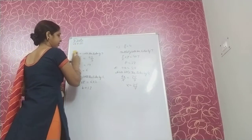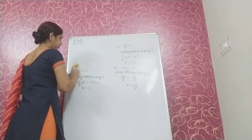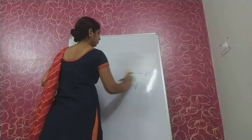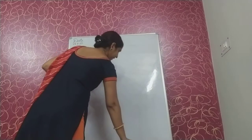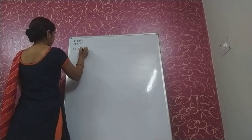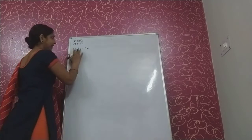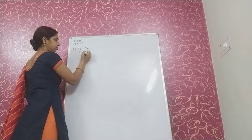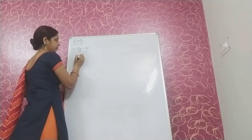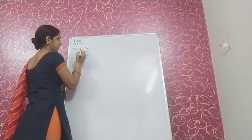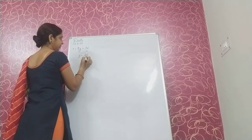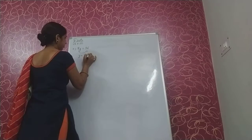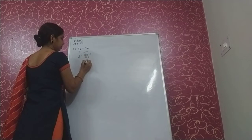Now the remaining parts by transpose method. Next part: 8y equal to 36. 8y means 8 multiplied by y. When we transpose this 8 to the right side, it divides 36. So y is equal to 36 upon 8. Both are divisible and the answer is 9 upon 2.